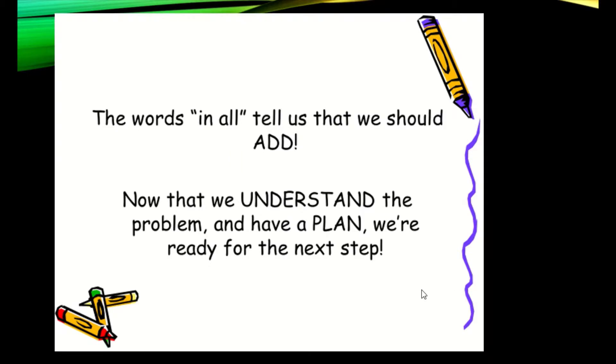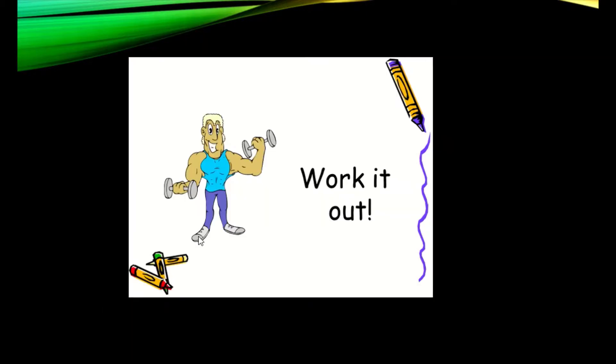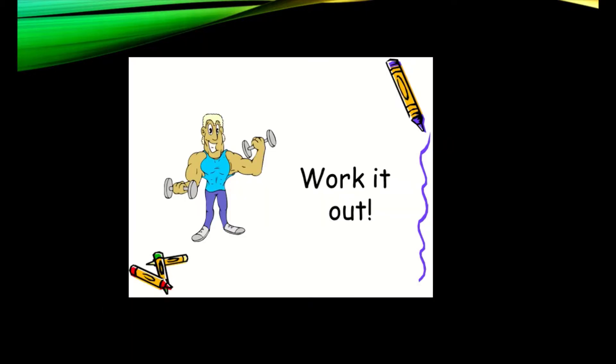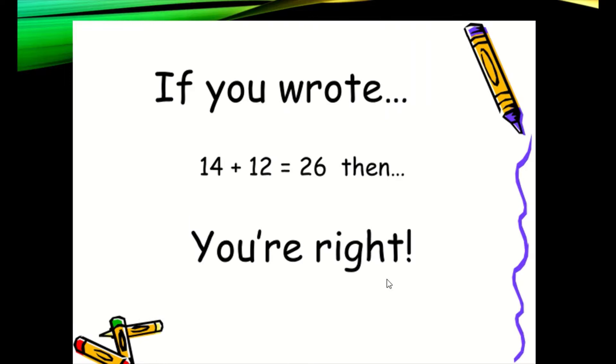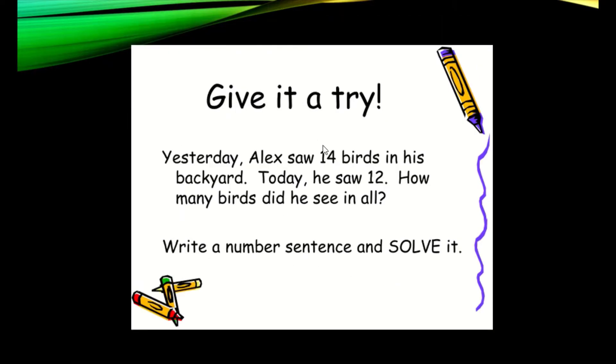Let's see what is the next step. Step 3: Solve it. Write the number sentence using the information in the problem and work it out. Let's see, give it a try. Yesterday Alex saw 14 birds in his backyard, today he saw 12. How many birds did he see in all? Write a number sentence and solve it. If you wrote 14 plus 12 equals 26, then you are right.